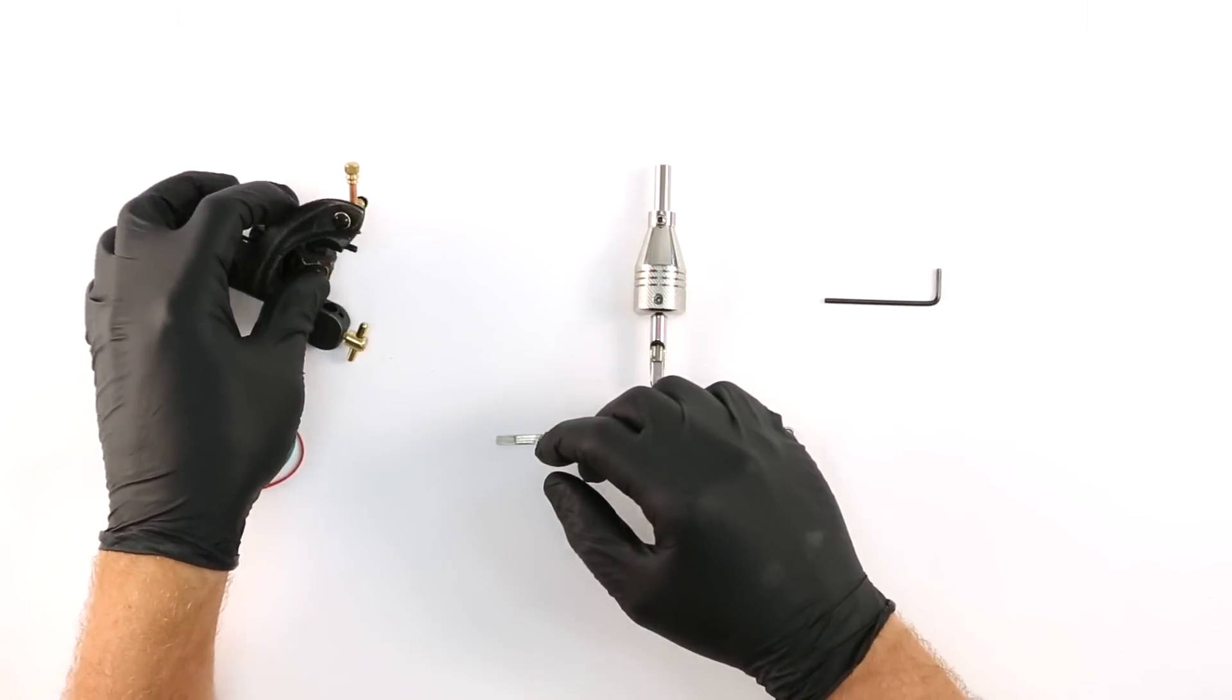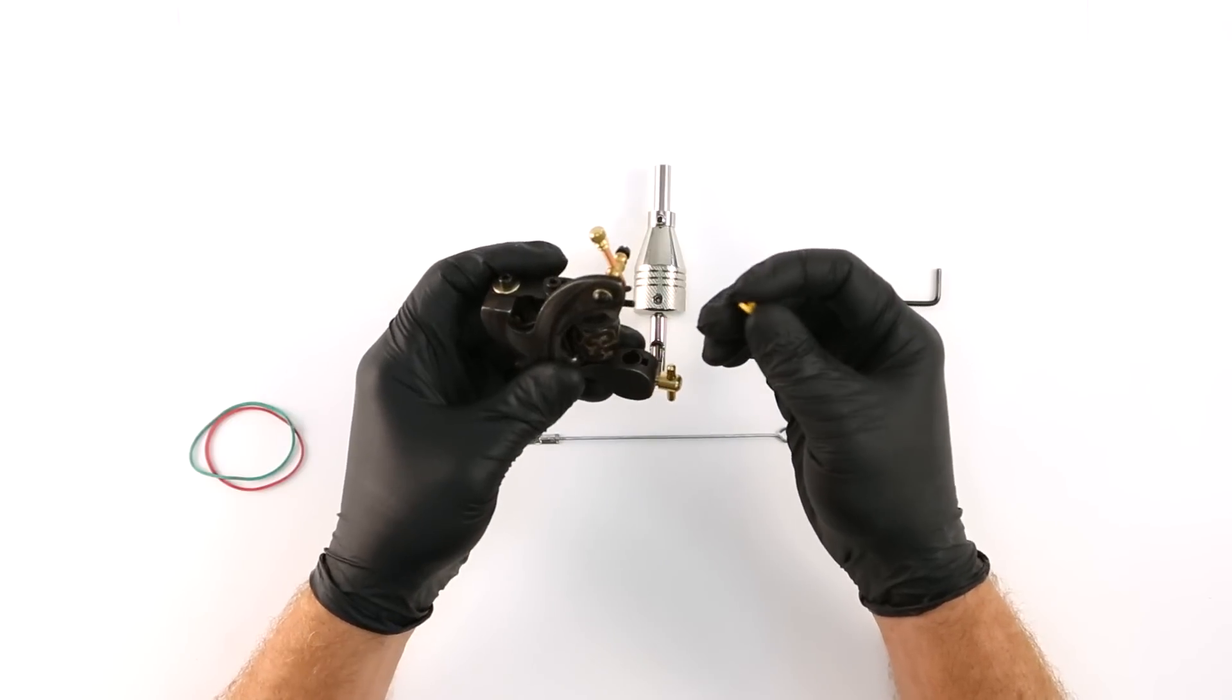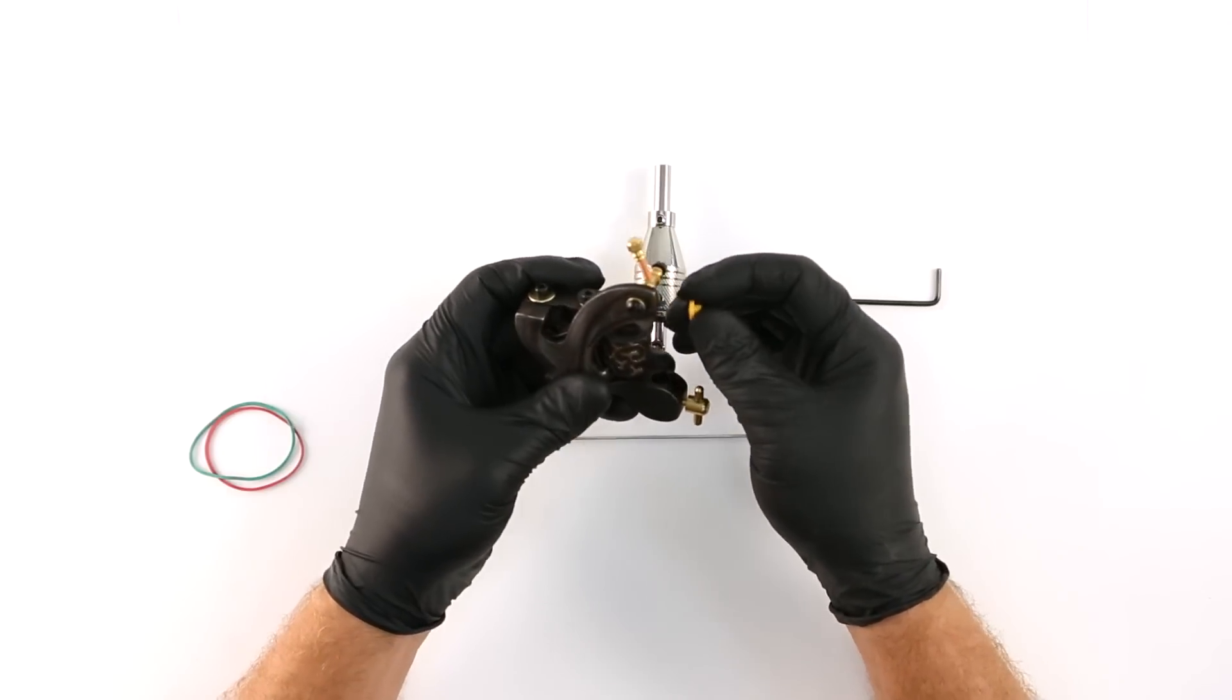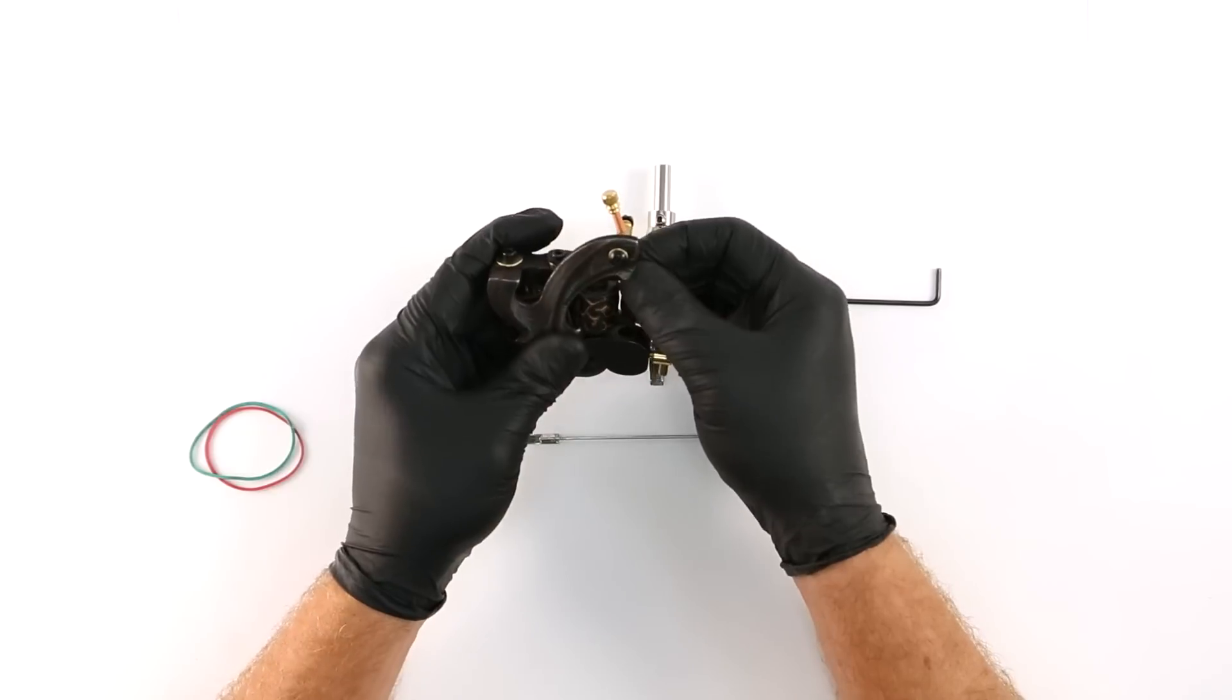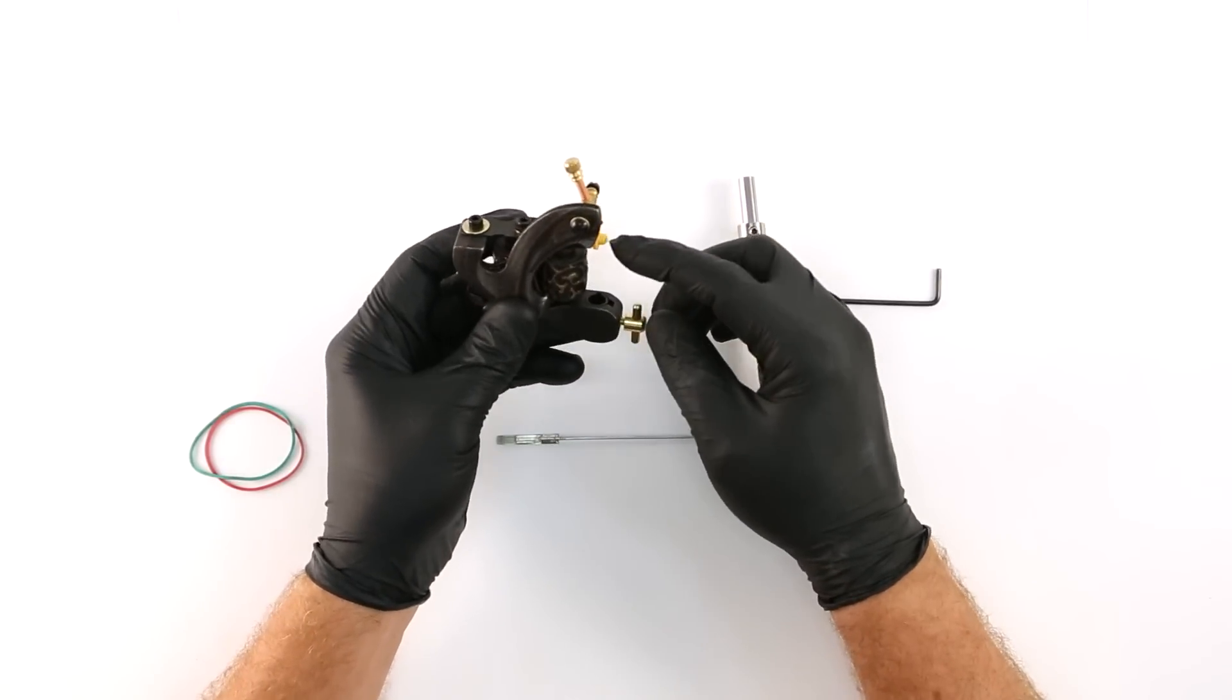Once the tube is assembled we next need to install our nipple or grommet. A nipple is a small rubber component you put on the end of the armature bar before the needle is attached. That helps keep the needle eye snug on the A-bar.